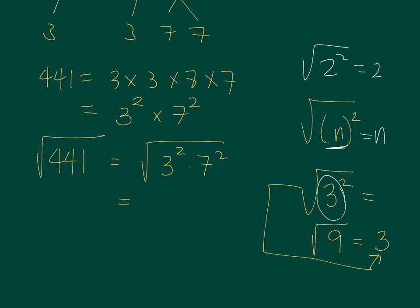Applying that, how do you simplify the square root of 3 squared times 7 squared? 3 times 7, because you're taking the square root of 3 squared times 7 squared. So, it is equal to 21.